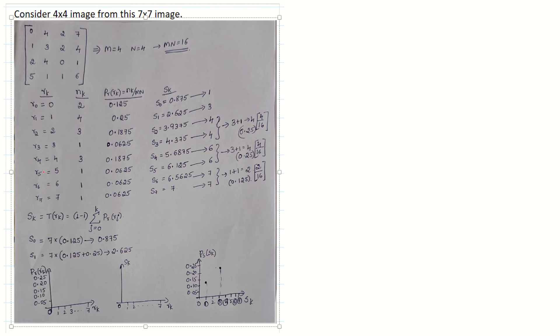The image we are considering here has four rows and four columns, so M×N, which is four cross four, equals sixteen.